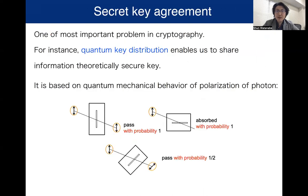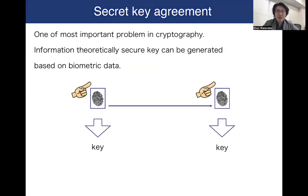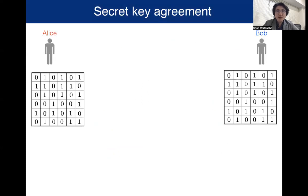So in cryptography, it is an important problem to consider how to share a secret key, which is known as the secret key agreement problem. Usually, in order to realize an information theoretically secure secret key, we rely on certain physical assumptions such as availability of quantum communication or availability of biometric data. Ideally, by using such physical resources, the legitimate parties can share a perfect secret key.